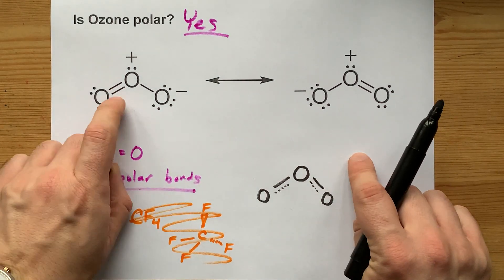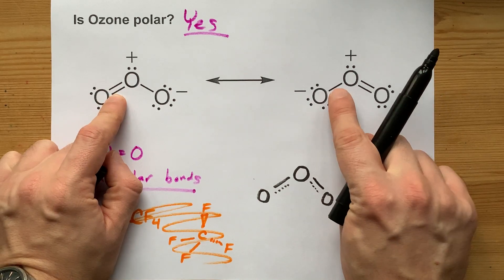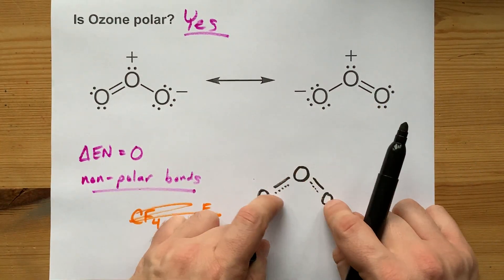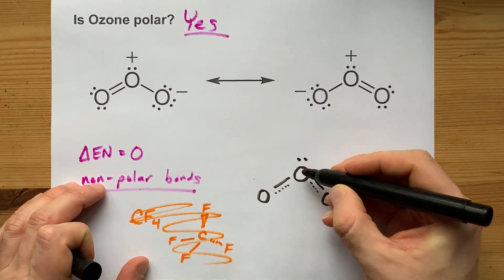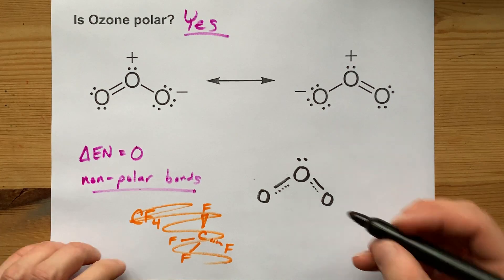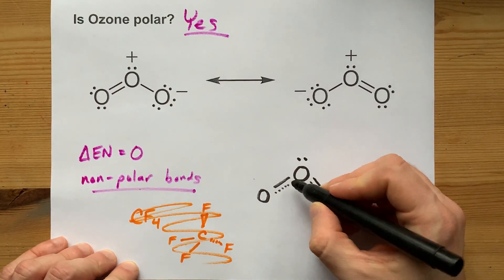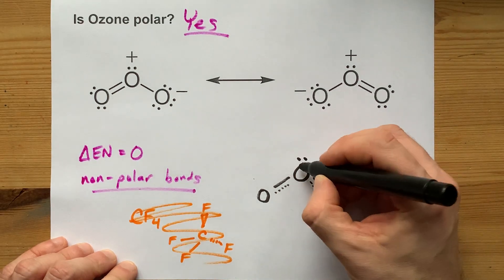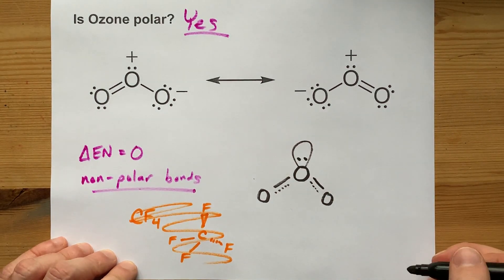Instead of showing it as sometimes double and sometimes single, it's always halfway in between. We often draw it like this. But that lone pair on the central oxygen never disappeared. So you have a non-polar bond on one side with some electron density, a non-polar bond on the other side with some electron density, and a lone pair in a fixed position on the central oxygen.